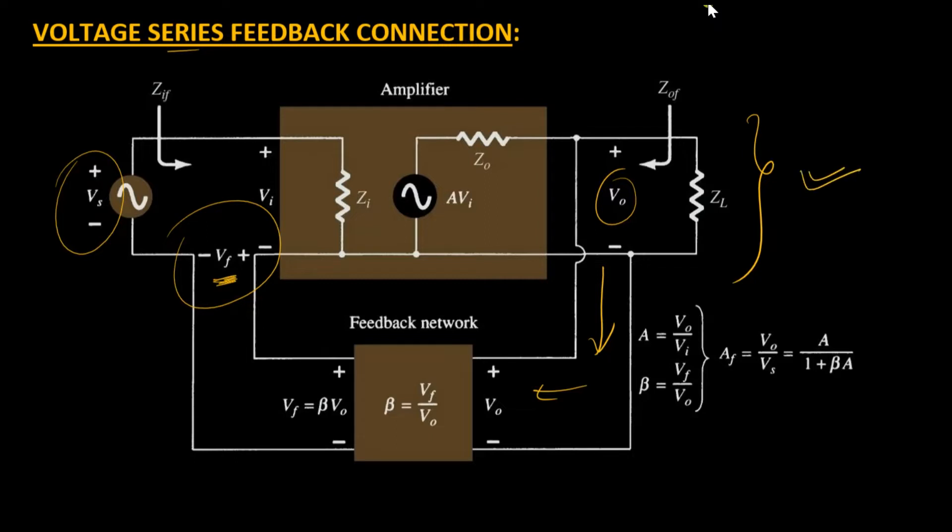We already know that with a voltage feedback connection on the output side, output impedance will definitely decrease. Likewise, with a series connection on the input side, input impedance Zif will increase and Zof will decrease. In this tutorial, we will develop understanding of how this input impedance increases with series connection and how output impedance drops with voltage type feedback.